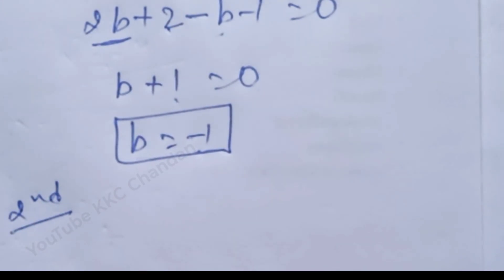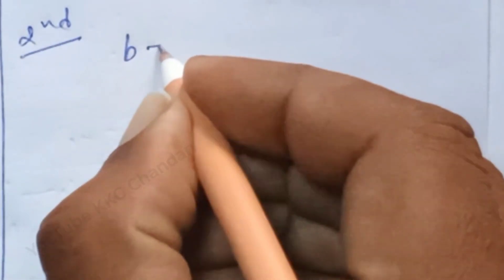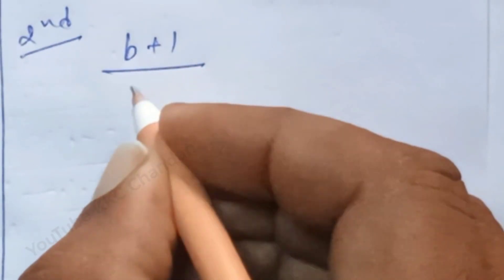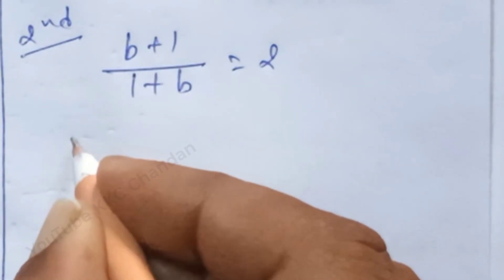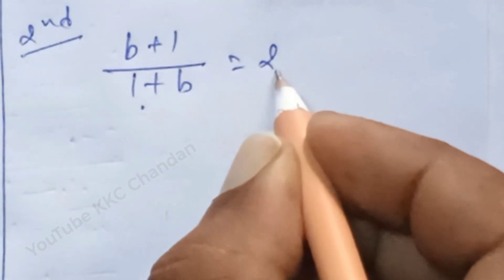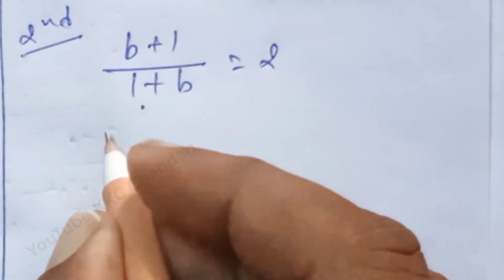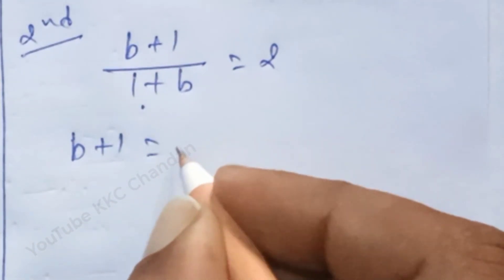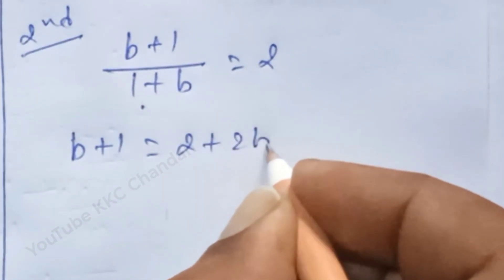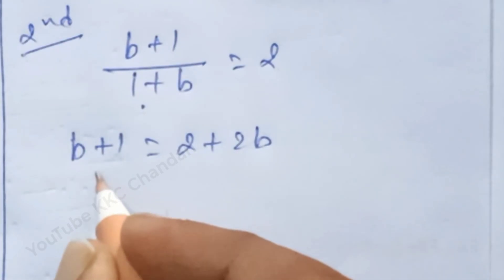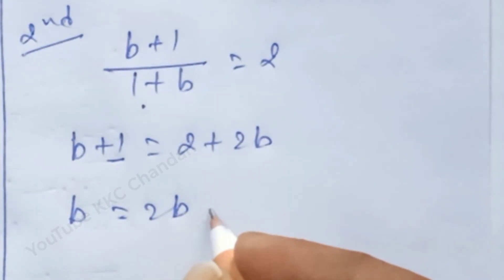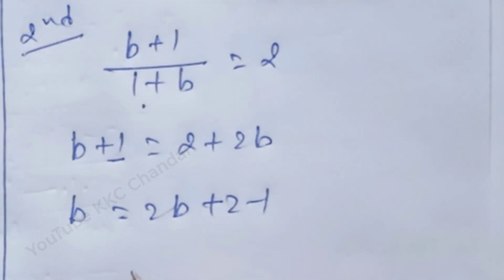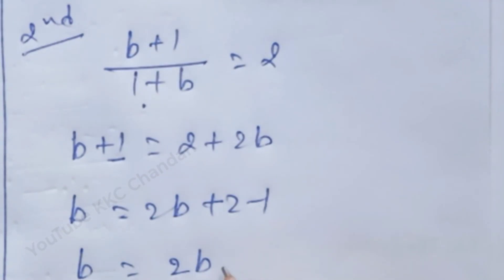According to the second method, b plus 1 divided by 1 plus b is equal to 2. Multiplying across: b plus 1 is equal to 2 plus 2b. After that, bringing the term over: b is equal to 2b plus 2 minus 1, so b is equal to 2b plus 1.